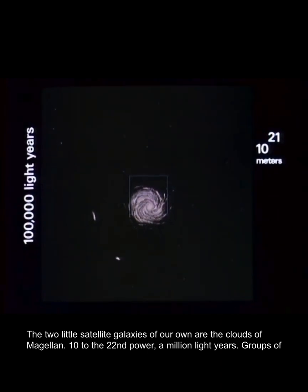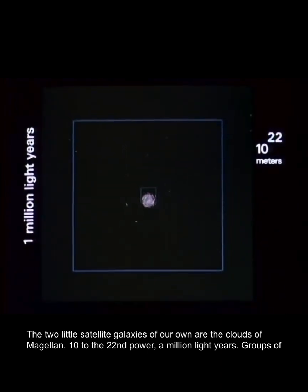The two little satellite galaxies of our own are the Clouds of Magellan. 10 to the 22nd power, a million light years.